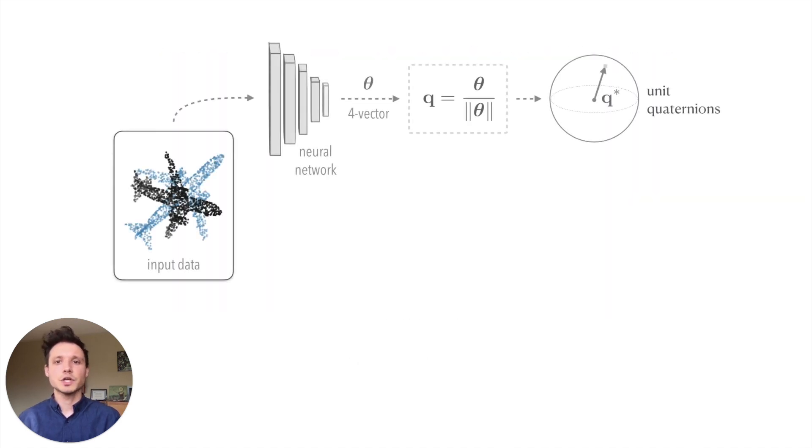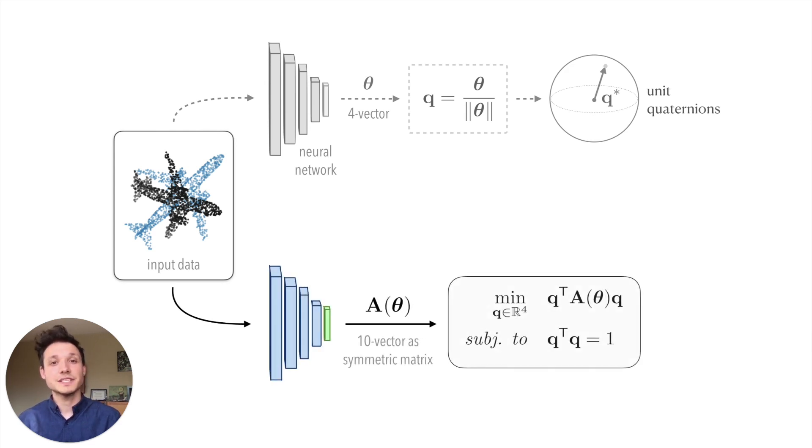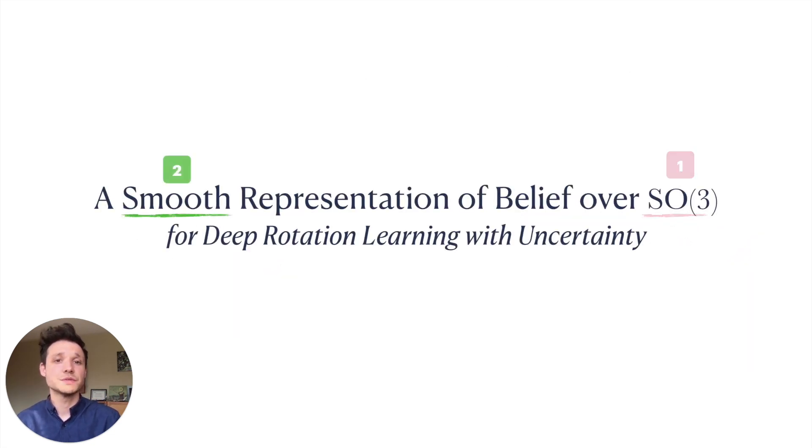Many deep learning libraries such as PyTorch already include a differentiable eigendecomposition implemented in this manner. A standard network trained to solve 3D perception tasks might simply normalize a 4 vector and interpret the output as a unit quaternion. In comparison, our approach requires the network to output a 10 vector, which we interpret as parametrizing an optimization problem.